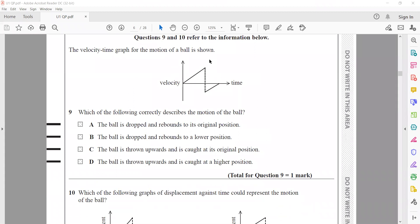A velocity-time graph for motion of a ball is shown. Which correctly describes the motion? First velocity is increasing - the ball is dropped, that's right, because when an object is dropped it accelerates and velocity increases. Does it rebound to original position or lower position? That depends on the velocity when it bounces back. The positive velocity was higher, so it hit with higher velocity, but when it changes direction the velocity is less negative, so it will rebound to a lower position. B is the right answer.